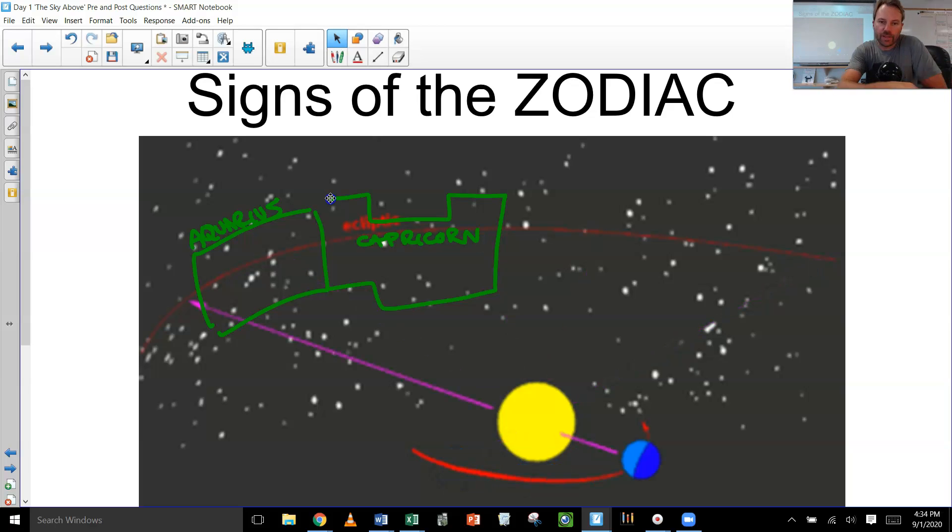And I think that the next one after Capricorn would maybe be Aquarius. I'll just draw another one too while I'm there. So here I've drawn two of the 13 constellations in the sky as viewed from earth.